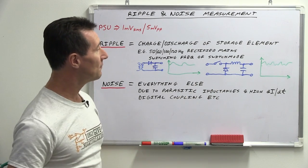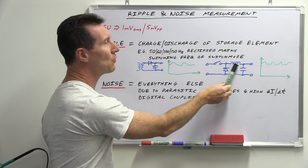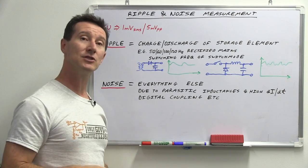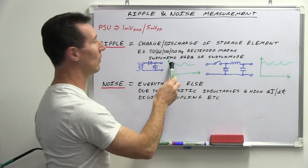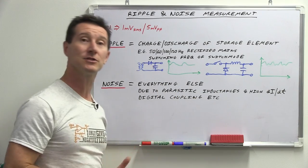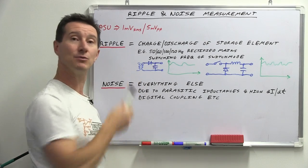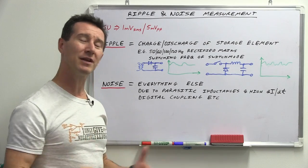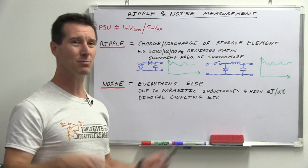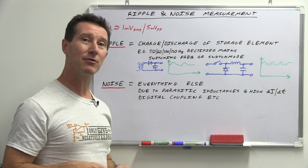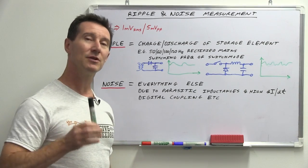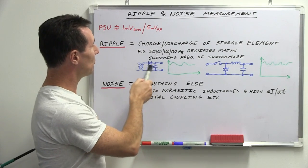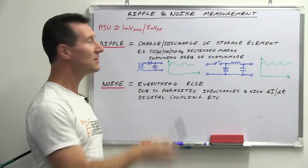But the term ripple also applies to a switch mode power supply - a DC-to-DC converter. Take this buck converter, which converts a higher voltage down to a lower voltage. The storage element here is the inductor, and the charge-discharge cycle of the inductor in the switch mode converter gives you your ripple. It won't look as smooth as mains-derived ripple, but it's still periodic. In a switch mode supply it could be tens of kilohertz up to a couple hundred kilohertz or even a megahertz. It's defined as that base frequency of the charging and discharging of your storage element.